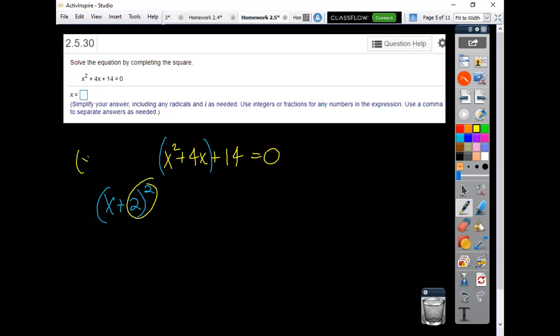So if you did x plus 2 times x plus 2, x times x you'd have your x squared, 2x and 2x. I'd have my 4x that I need, but I also have this 2 times 2 or a 4. So that's the 4 I'm talking about.